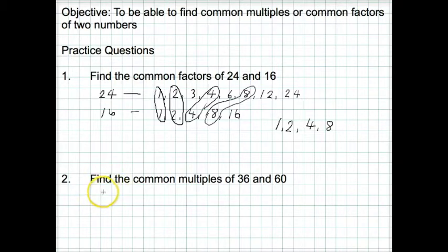So we write down, first of all, our multiples of 36. So we've got 36, 72, 108, 144, 180, 216.